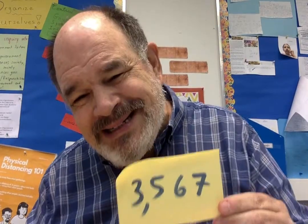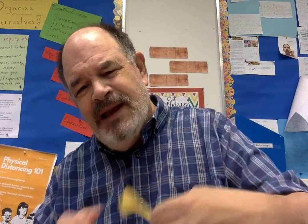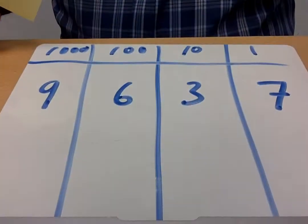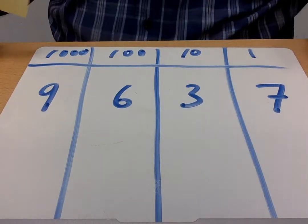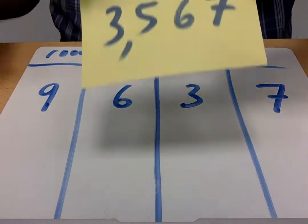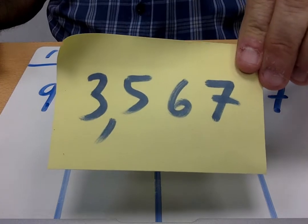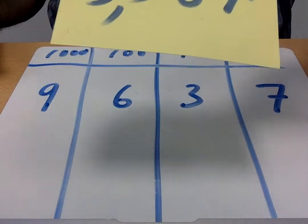But my partner Bob doesn't know that. I'm not going to show this to him. I've got to have it written down so Bob knows I'm not cheating him, but I'm not going to show it to Bob. So Bob's going to make a guess here. Let me see if I can show you Bob's guess. So he's guessed 9,637. There's my real number, 3,567.